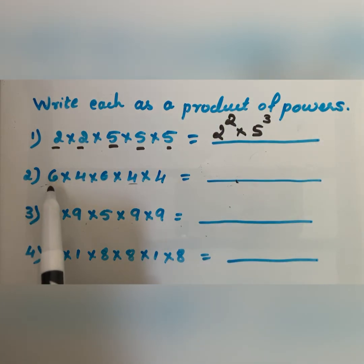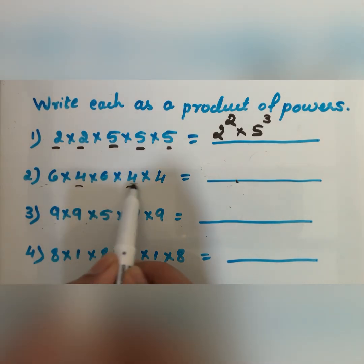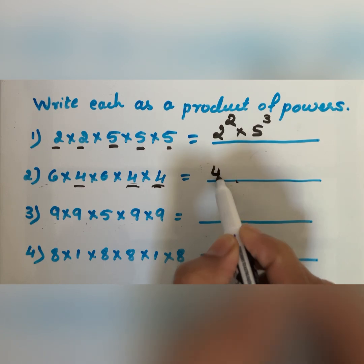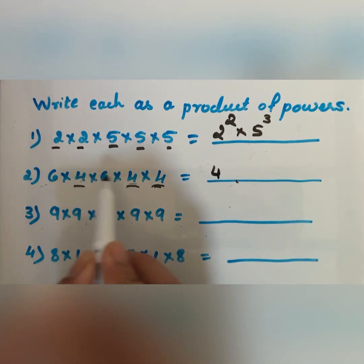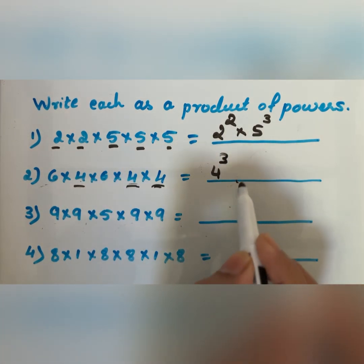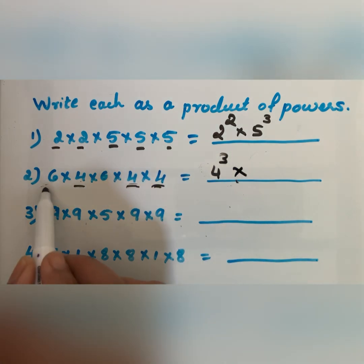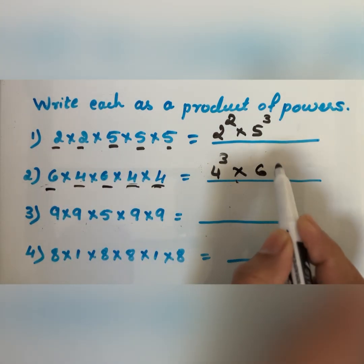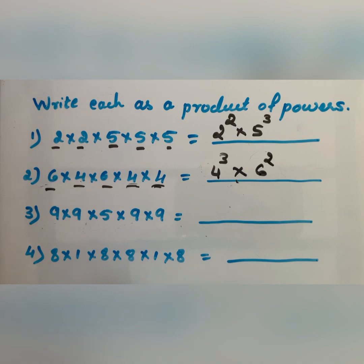Now, 6 times 4 times 6 times 4 times 4. You always take the smaller number first. The smaller number is 4. 4 is taken 1, 2, 3 times, and 6 is taken 2 times. So, 4 cubed times 6 squared.